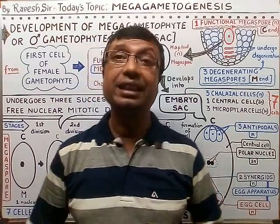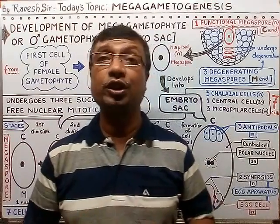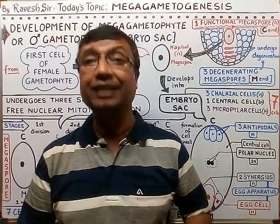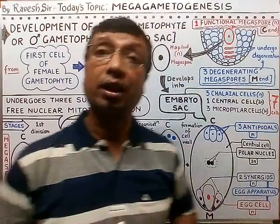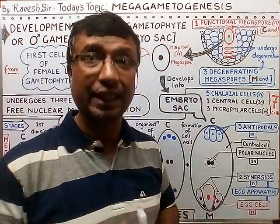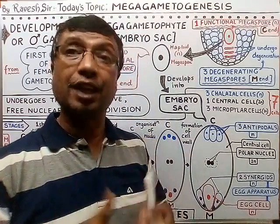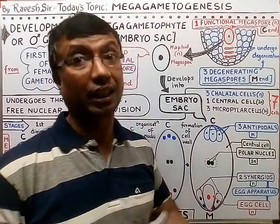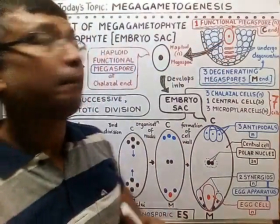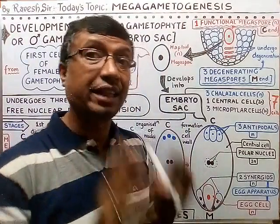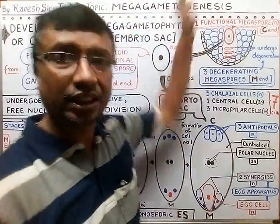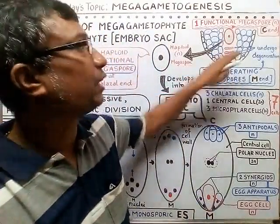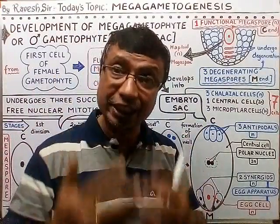Hello friends, welcome back. In the last episode we learned the process of megasporogenesis — the formation of megaspore from the archesporial cell in the ovule. From one archesporial cell, one MMC (megaspore mother cell) is formed, and from one MMC, four megaspores are produced because meiosis gives rise to four haploid cells. But ultimately, out of these four, only one megaspore survives — called the functional megaspore — near the chalazal end. The remaining three degenerate away.